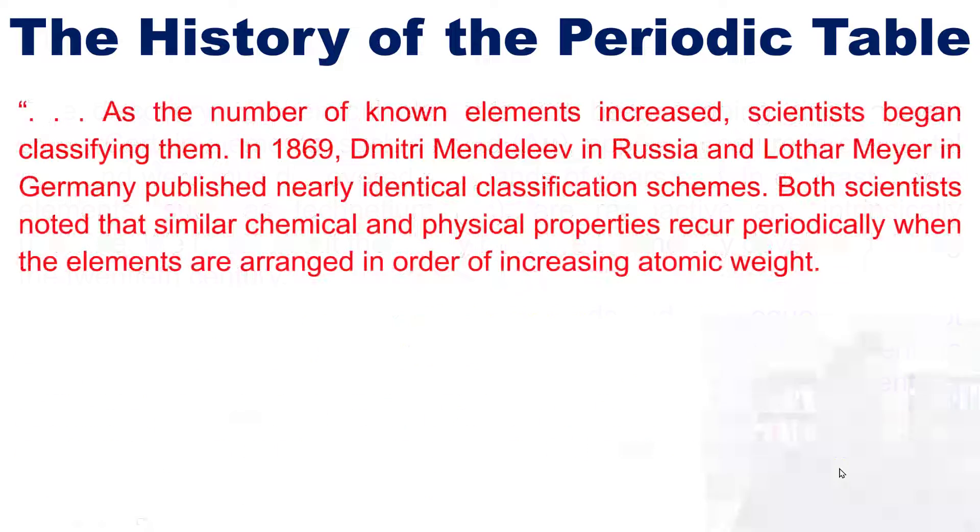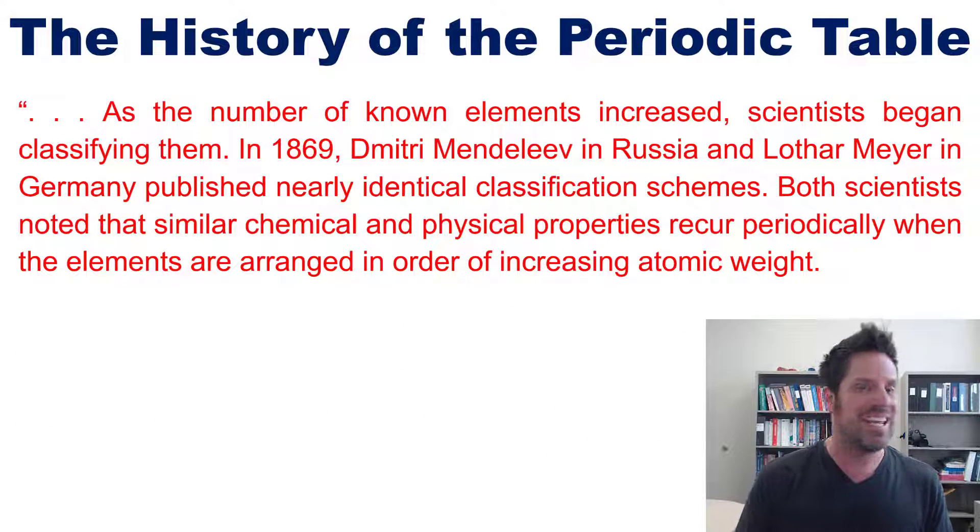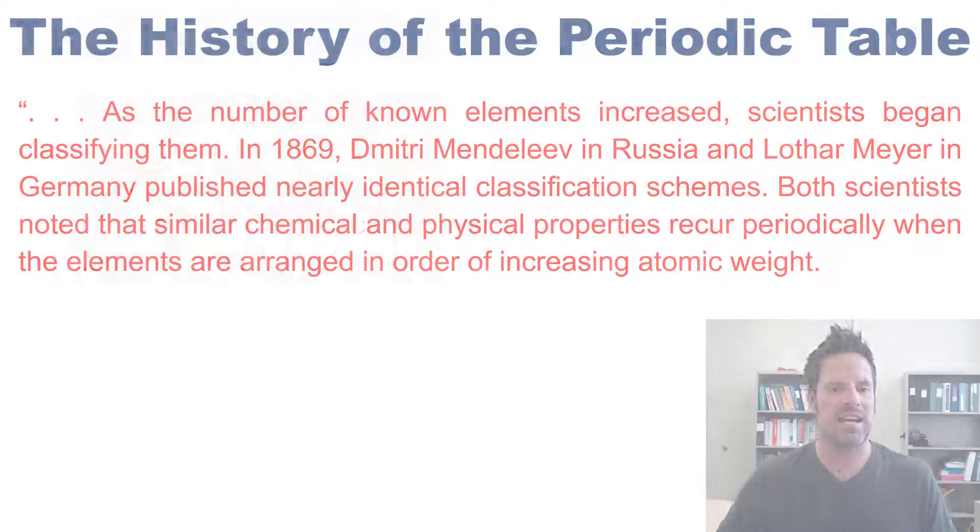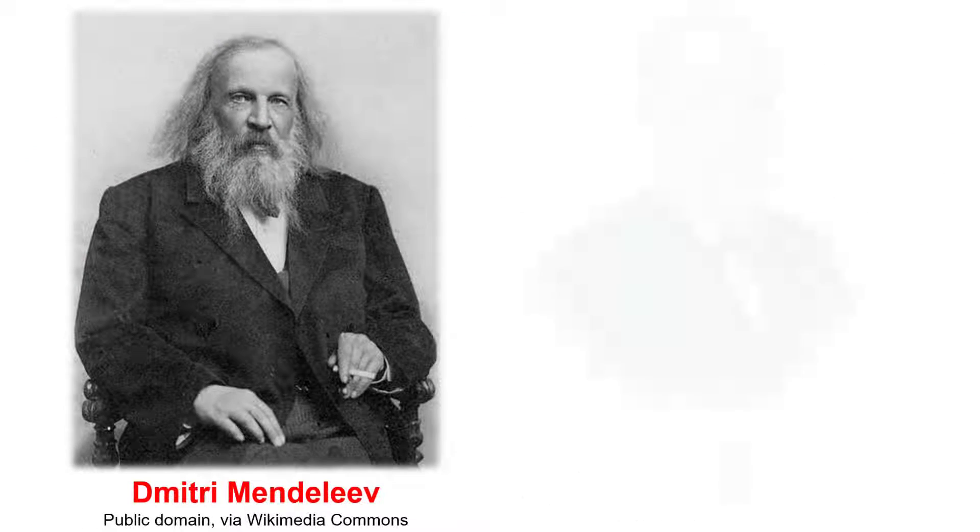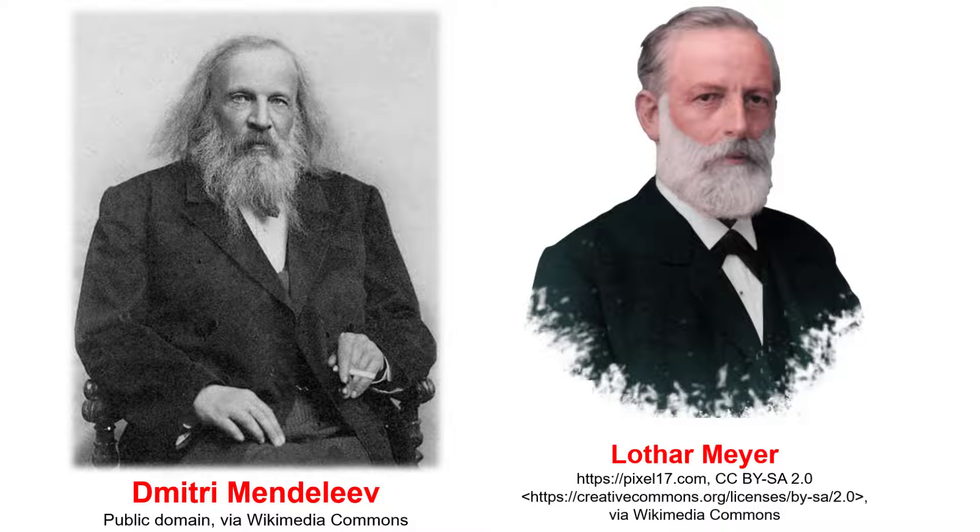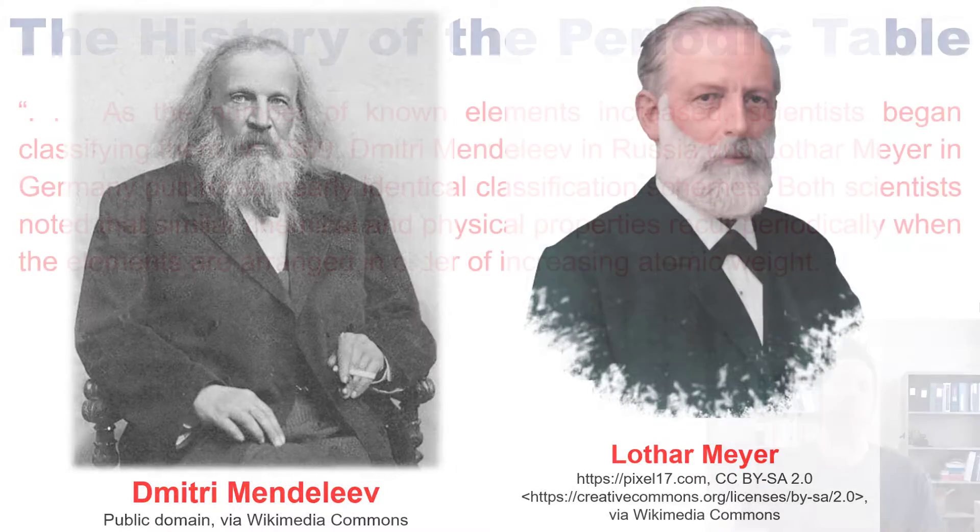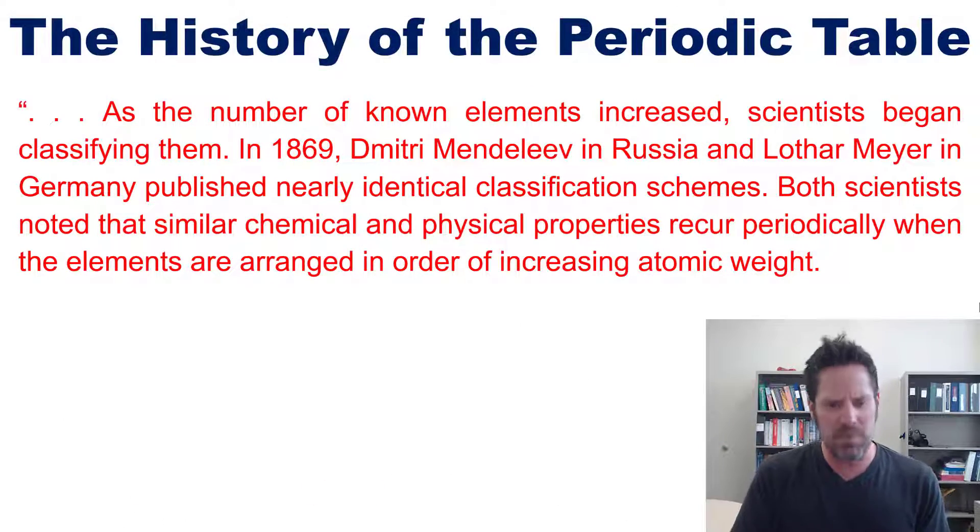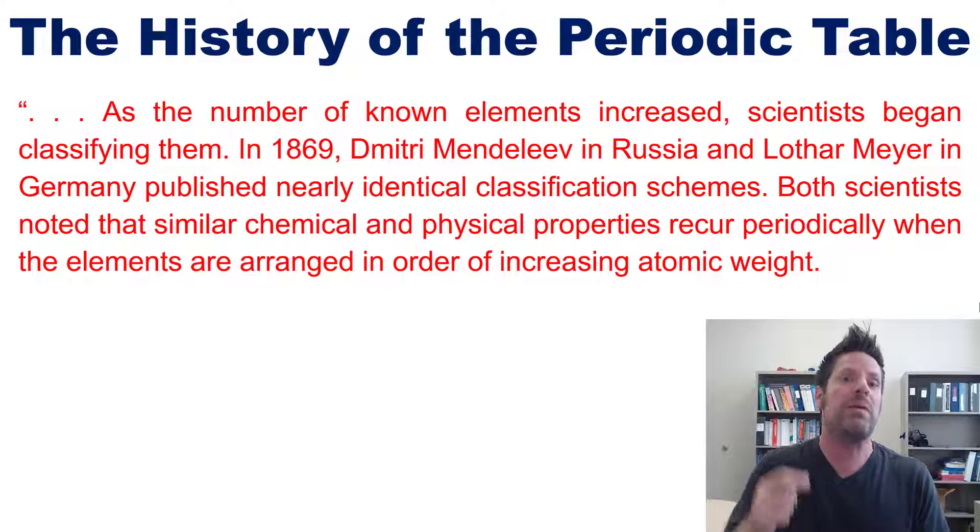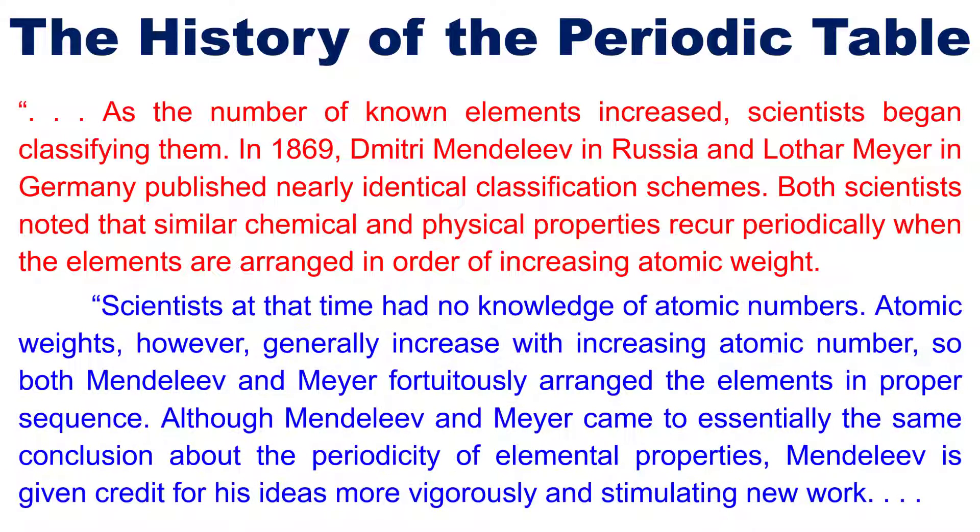As the number of known elements increased, scientists began classifying them. In 1869, Dmitry Mendeleev in Russia and Lothar Meyer in Germany published nearly identical classification schemes. Both scientists noted that similar chemical and physical properties recur periodically when the elements are arranged in order of increasing atomic weight.